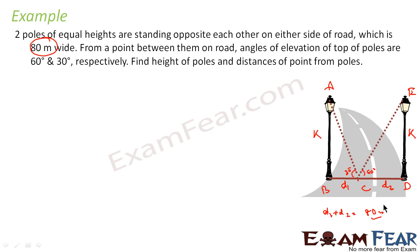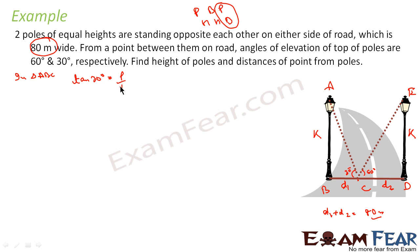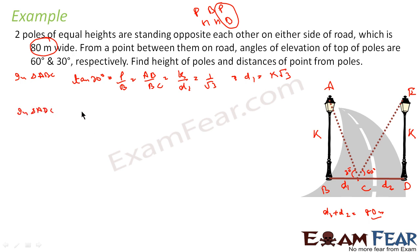In triangle ABC, with C as the frame of reference, the perpendicular is AB and the base is BC. Using tan, we say tan 30° = P/B = k/d1. Since tan 30° = 1/√3, we get d1 = k√3.